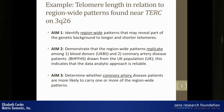The example I'm going to give has to do with telomere length in relation to region-wide patterns found near TERT, a gene located on chromosome 3. The aim is to identify region-wide patterns — not SNP comparisons — but a definition of the region, several patterns that define the region and genetic variation within the region. And I want to check whether those region-wide patterns strongly predict telomere length.